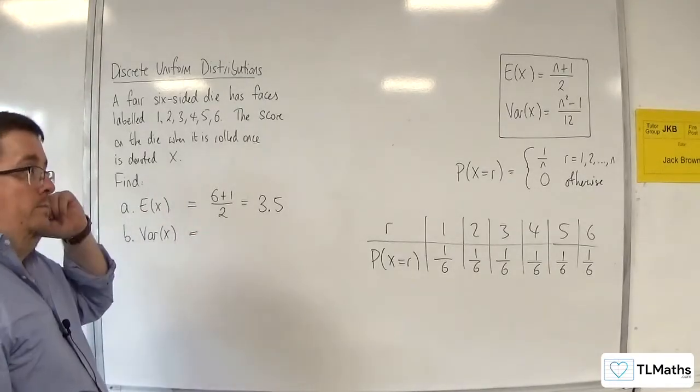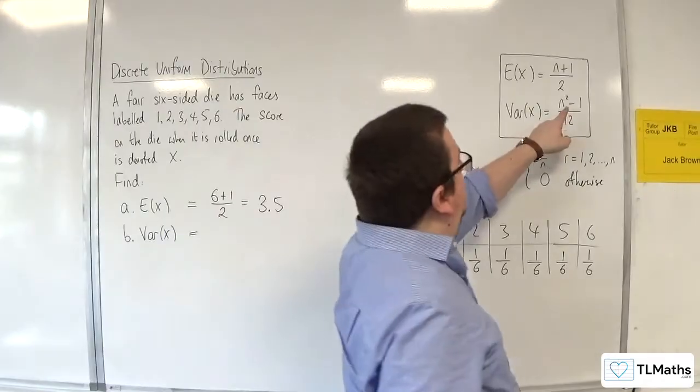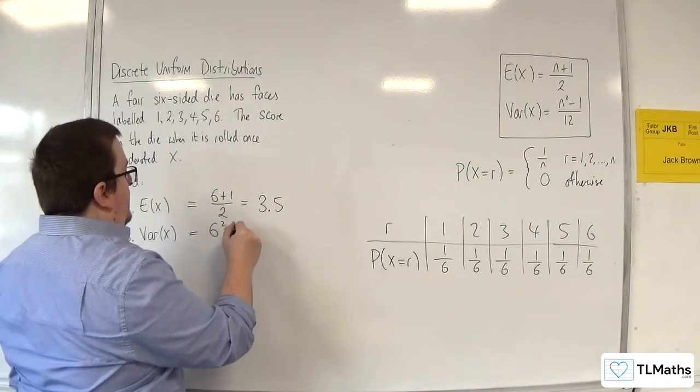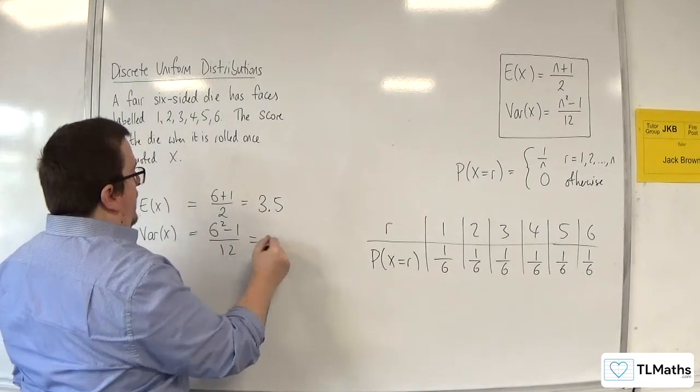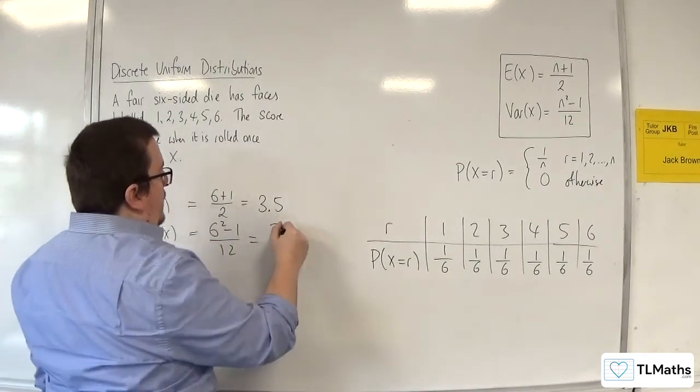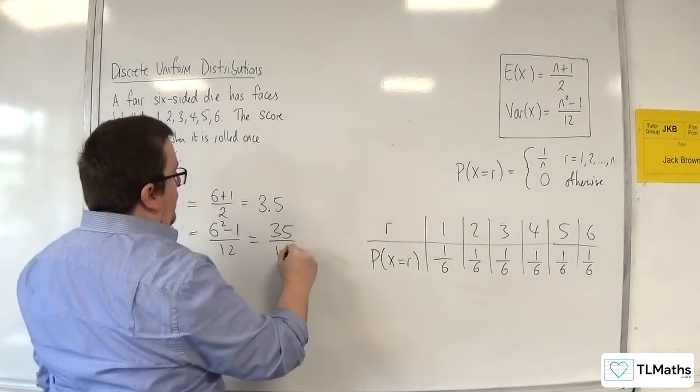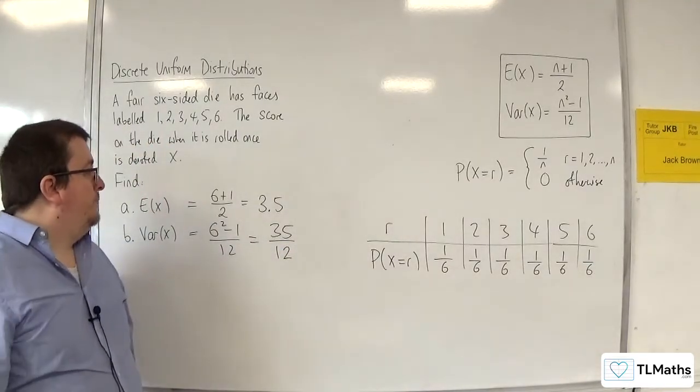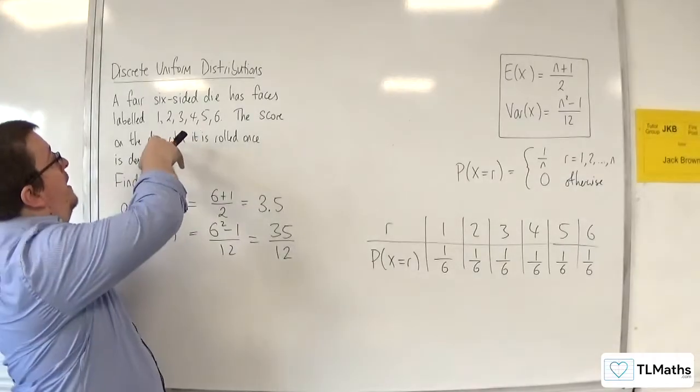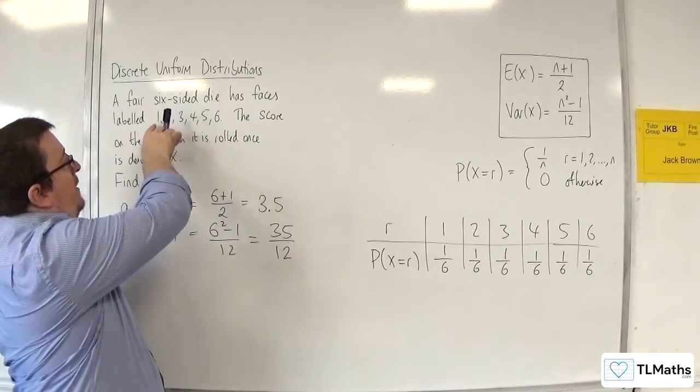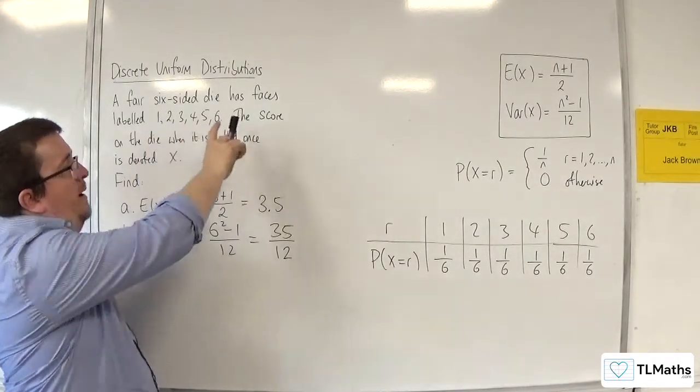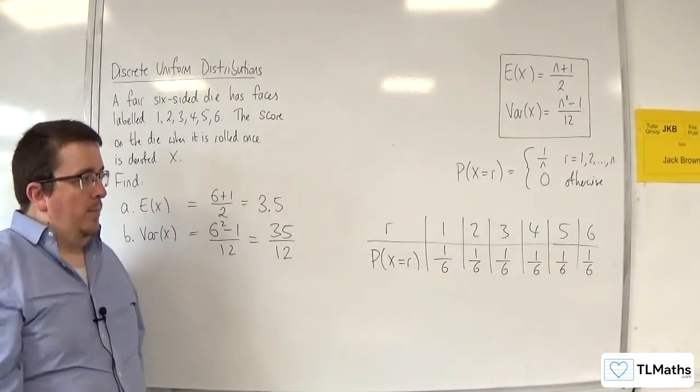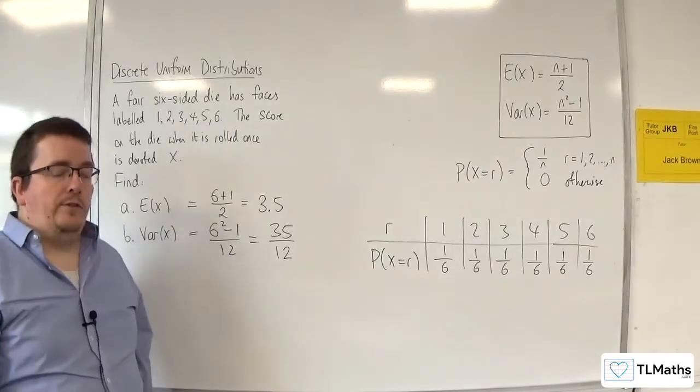Now, Var of X. Very easy now, because we know that n is 6, so we just plug it in there. So, 6 squared take away 1 over 12. 36 take away 1 is 35, so it's 35 twelfths. When you've just got a situation where it's labelled from 1 all the way up to n, it's very easy to just plug the value of n straight into the formula.